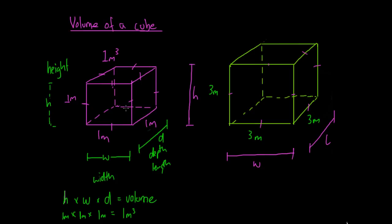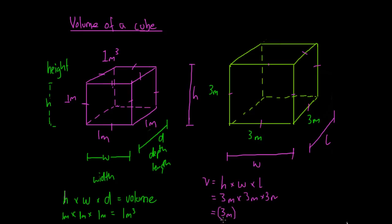We can apply the same logic here. We know that height times width times depth gives us the volume. I'll use V to denote volume. Volume equals height times width times length (or depth). So in this case it's just going to be 3 meters times 3 meters times 3 meters, which we can also denote as 3 meters to the power of 3. The volume is 3 times 3 times 3, which is 27, and meter times meter times meter gives us meter cubed. So the volume of this second larger cube is 27 meters cubed.